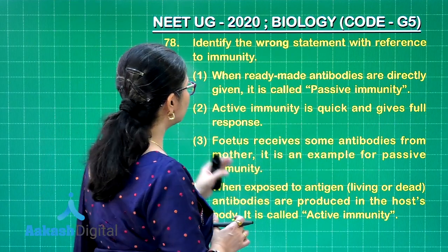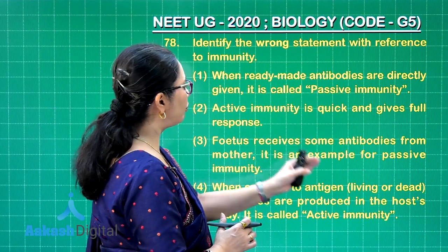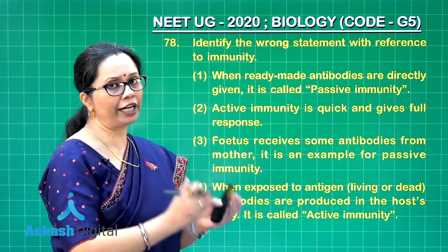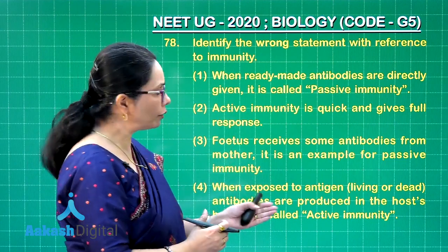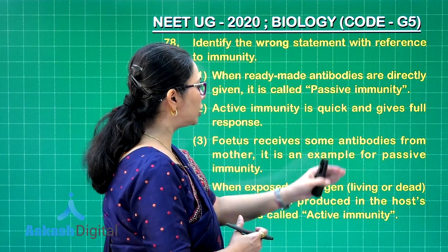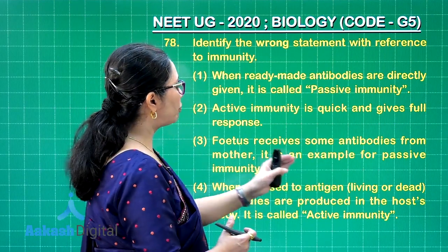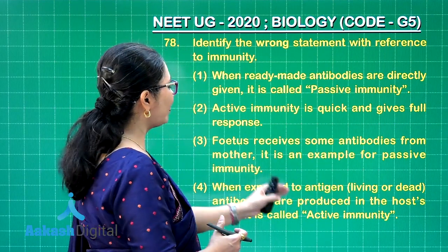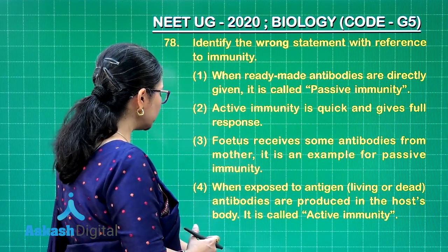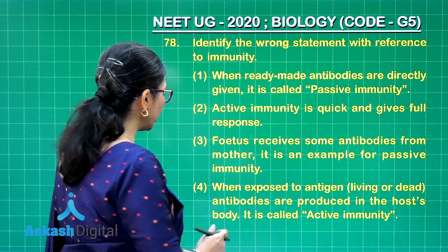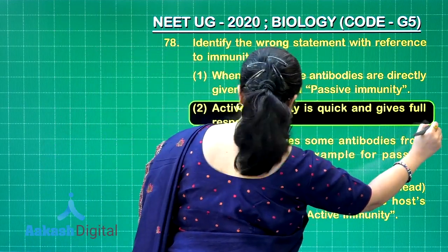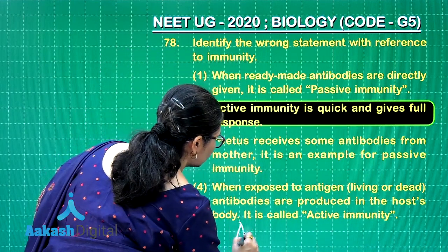Option 3: the fetus receives antibodies from the mother — that is an example of passive immunity, which is correct. IgG antibodies pass from mother to fetus through the placenta. Option 4: when exposed to antigen, whether living or dead, antibodies are produced in the host body — that is active immunity, also correct. So the only incorrect option is 2, which is our answer.